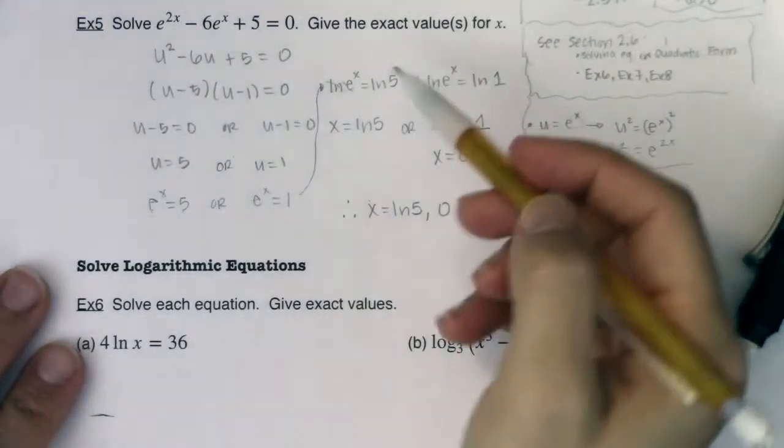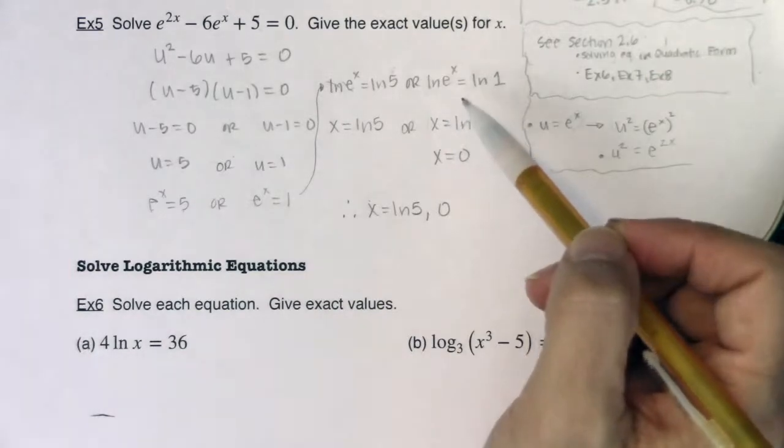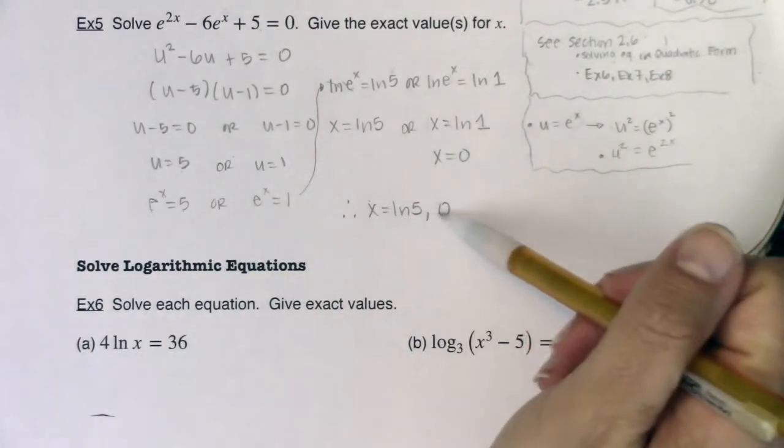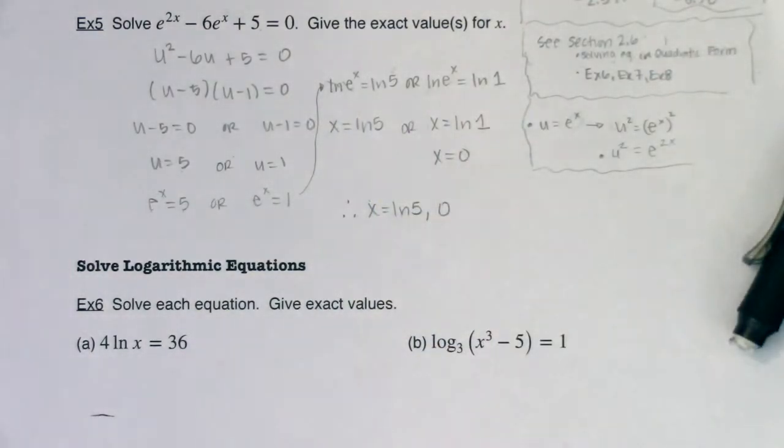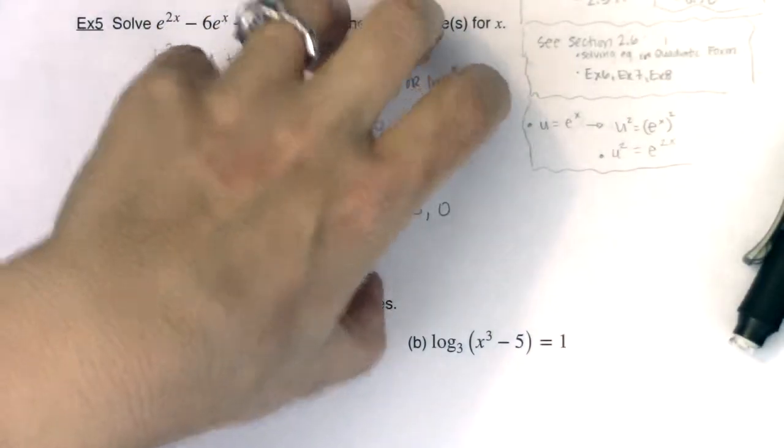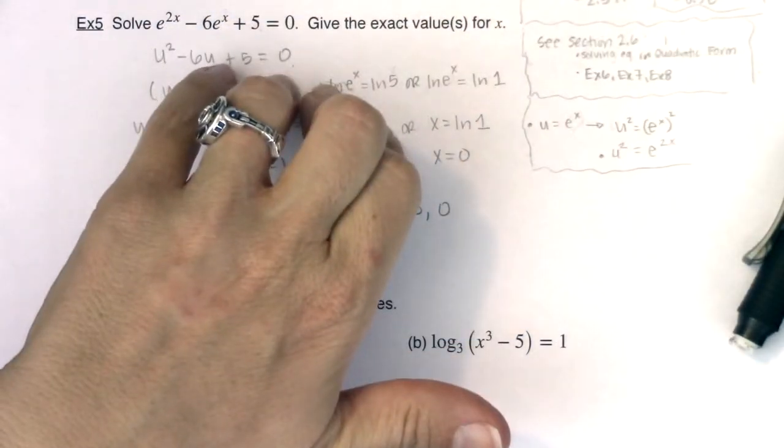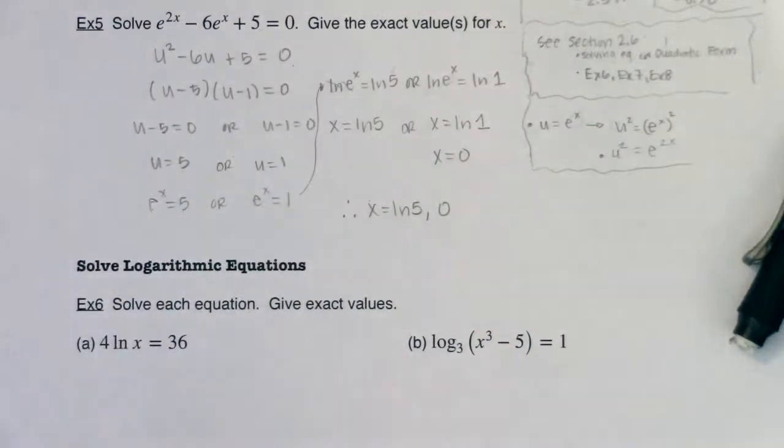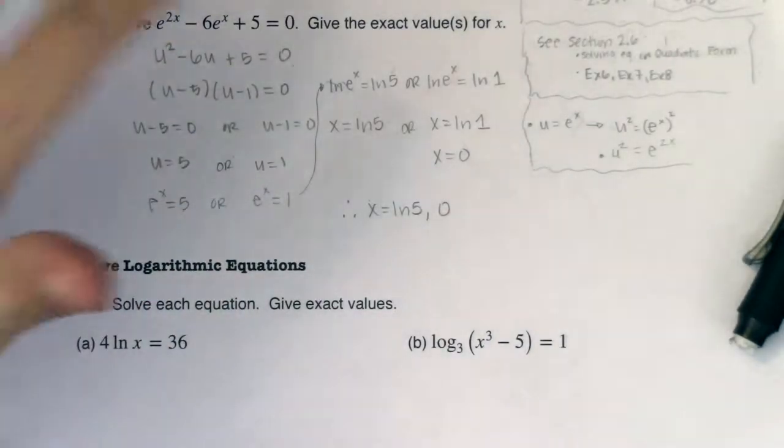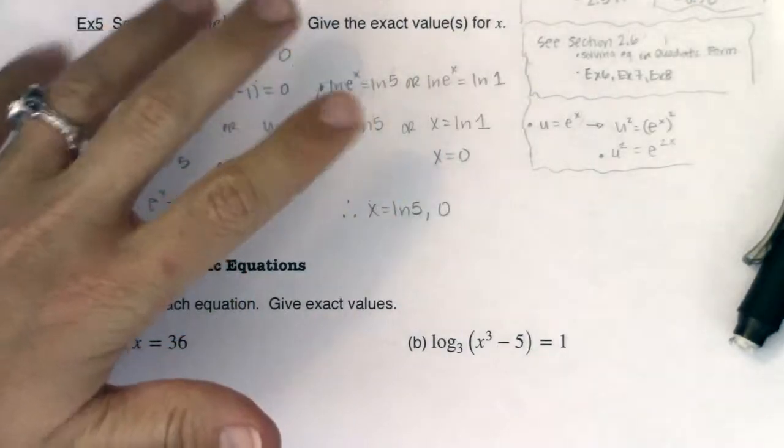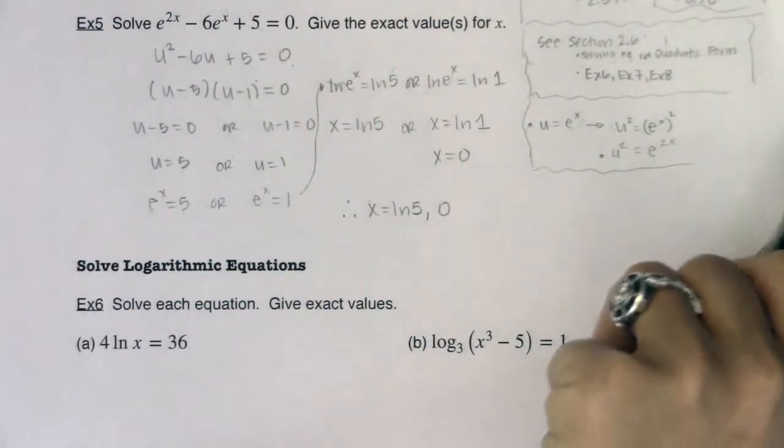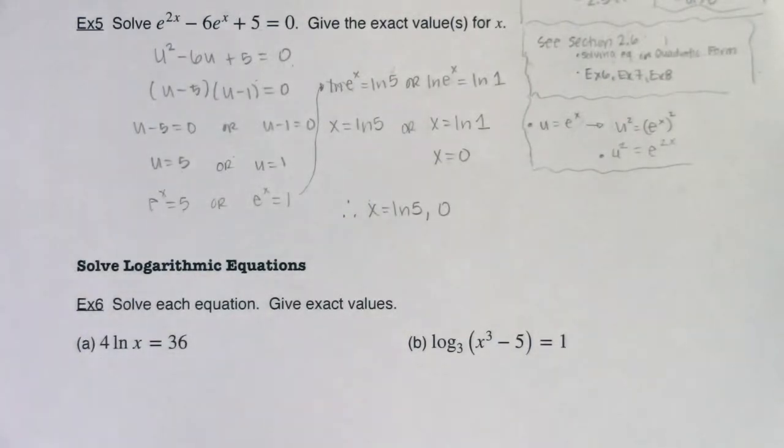If you have time at the end of any exponential equation, or when we get there, logarithmic equations, you can always plug these numbers back in and see if the solutions work. So with that, we've now talked about how to solve exponential equations when the bases are the same. We saw that in example 1. And then we really spent some time talking about how to solve exponential equations when the bases are not the same. And we did that in examples 2, 3, 4, and 5. So we're going to change gears. We're going to start solving logarithmic equations next. I will see you in a bit. Bye.